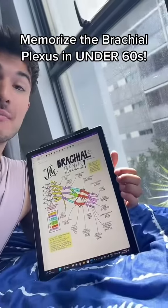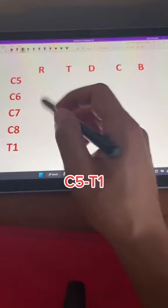I'm going to show you how to draw and memorize the brachial plexus in 60 seconds. So we know the nerve roots stem from C5 to T1, and there's five components. Remember to drink cold beer.